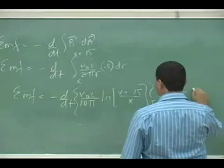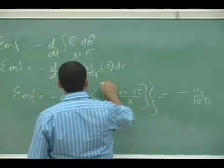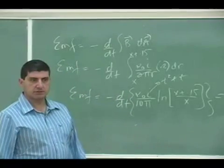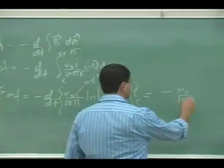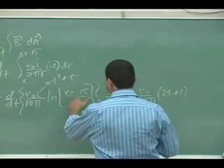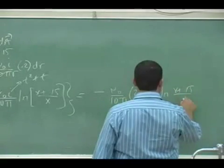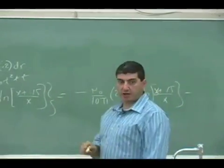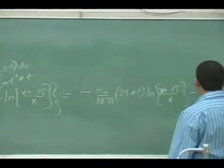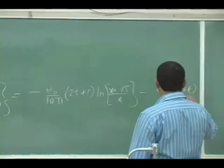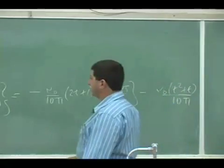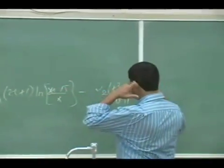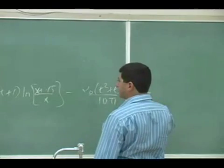So negative, you can just take the mu zero over 10 pi out, and then the i is t squared plus t. So we've got to take the derivative of that, which is 2t plus 1 times the Ln of... minus, so I'm using the product rule, minus mu zero times the current, which is t squared plus t over 10 pi, and then the derivative of the Ln, which is 1 over itself.